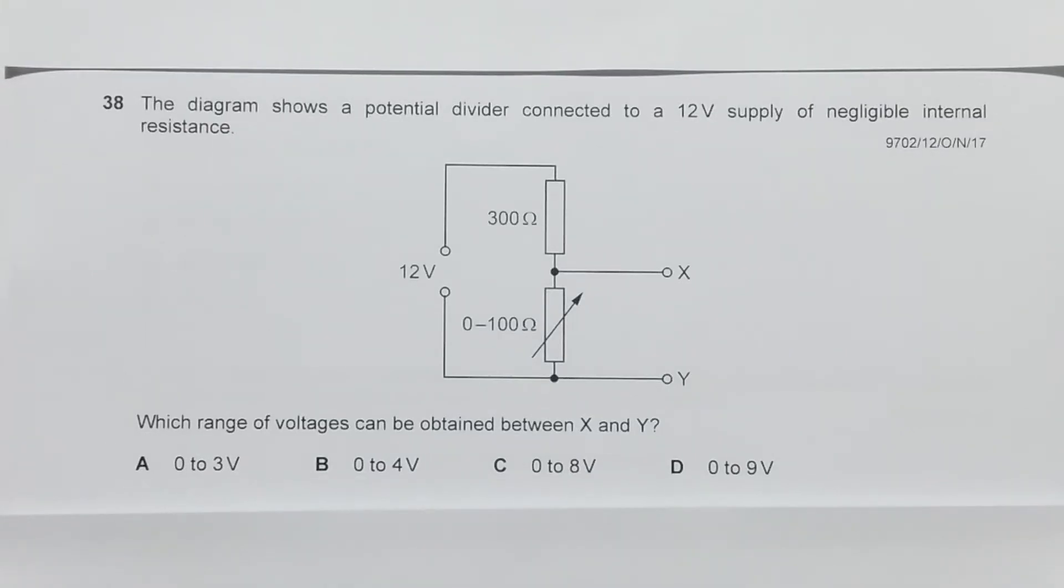This is question 38 from 2017 October November paper 12. The circuit shows a 12 volt supply in series with two resistors: one is a 300 ohm fixed resistor and the other is a variable resistor which can vary from 0 to 100 ohm. We need to calculate the voltages across the terminals X and Y.